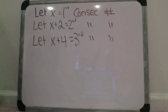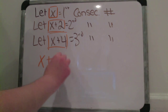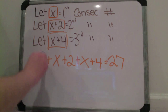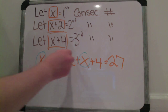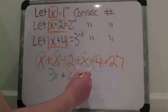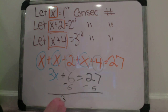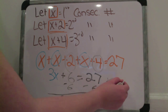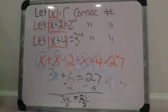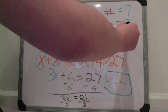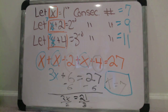Then we combine all of these together and get x plus x plus 2 plus x plus 4 equals 27. Now we combine the like terms and get 3x plus 6 equals 27. Then we subtract 6 from each side and get 3x equals 21. Then we divide by 3 on each side and get x equals 7. Replacing all the x's with 7: our first consecutive odd number is 7, our second is 7 plus 2 which is 9, and our third is 7 plus 4 which is 11. We add these to check and get 27.